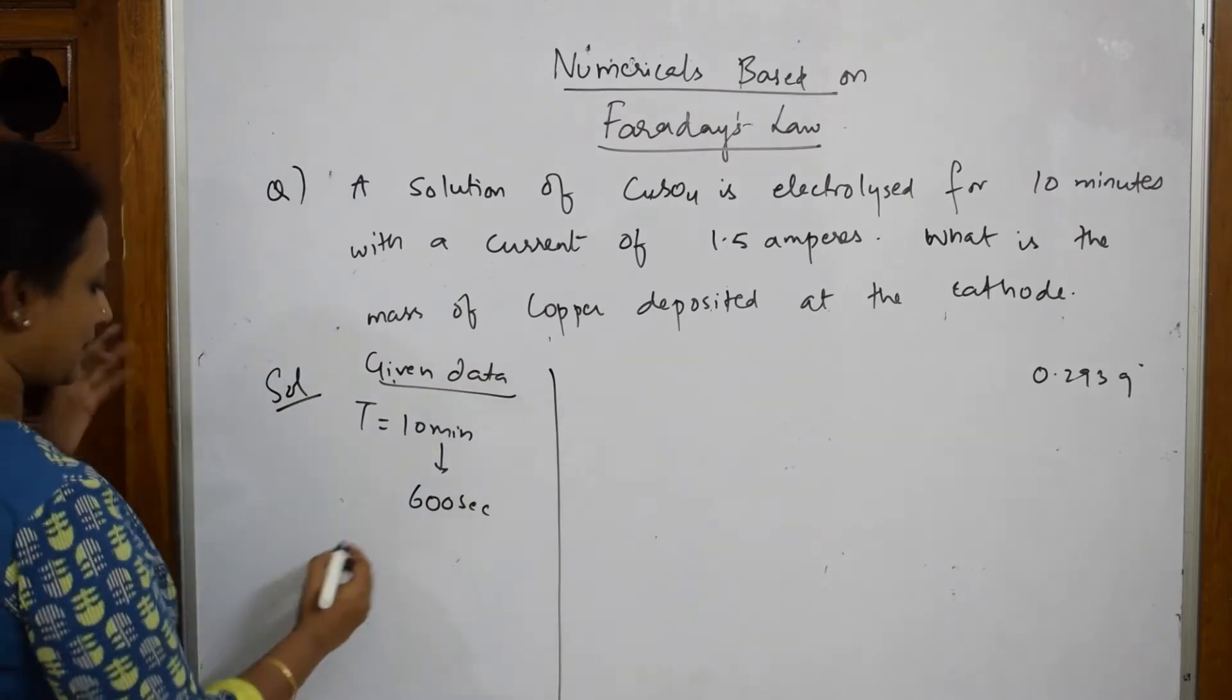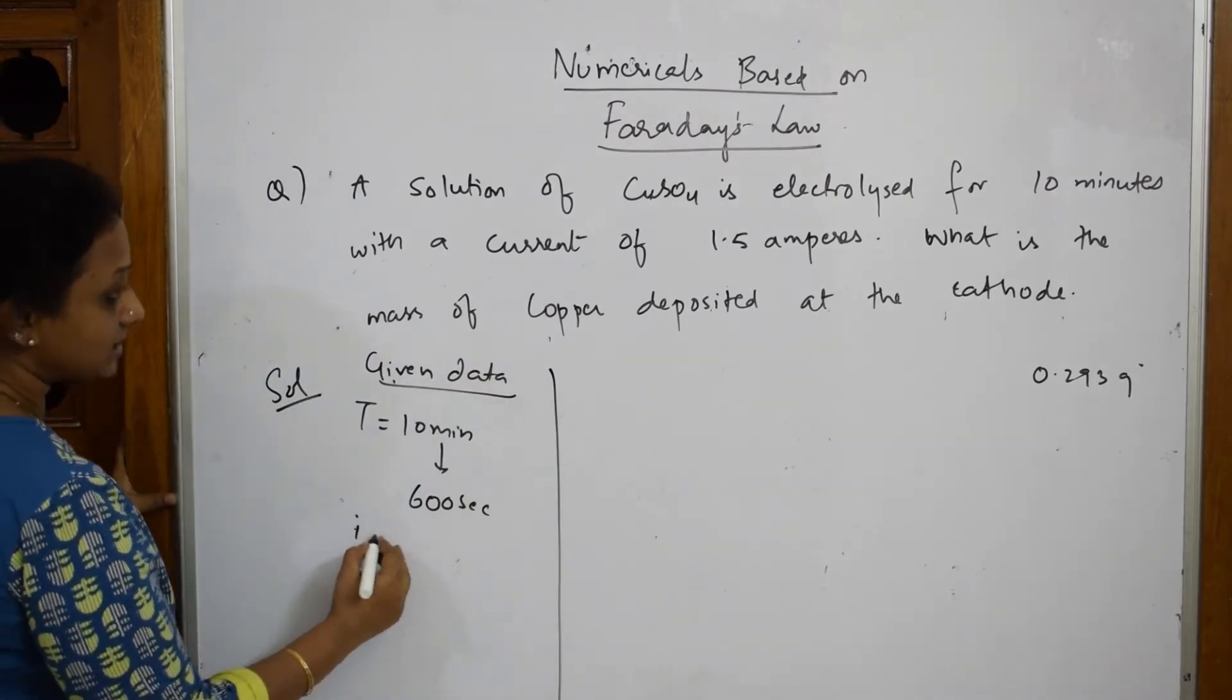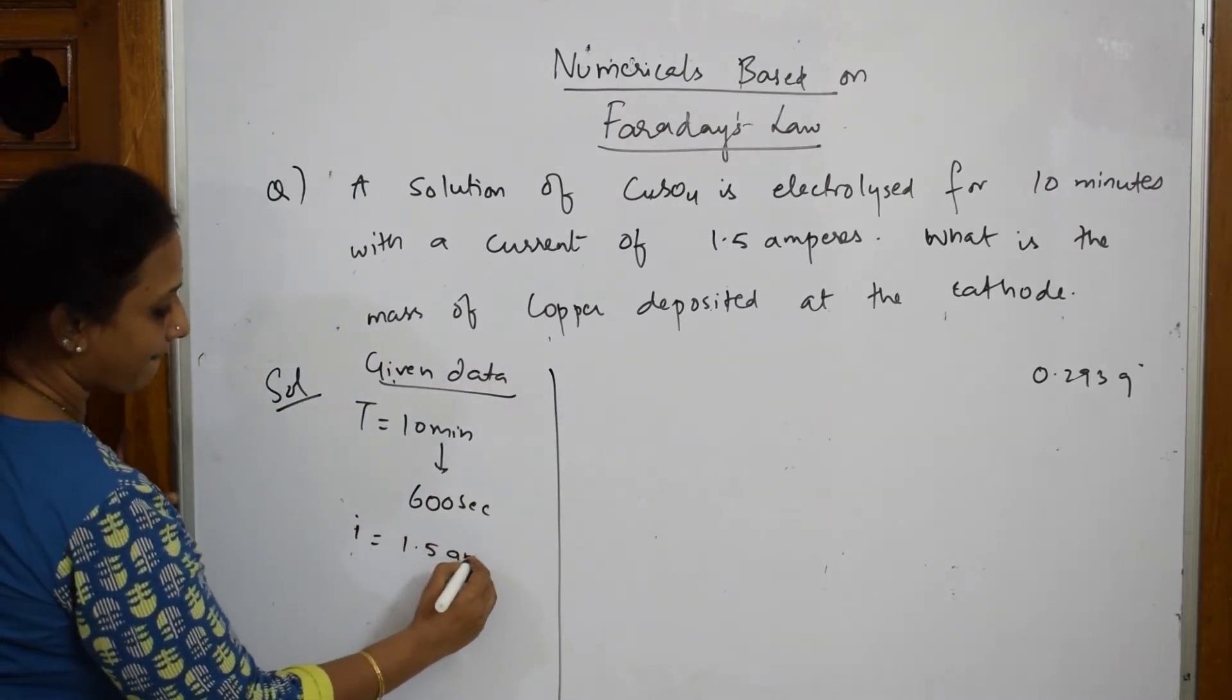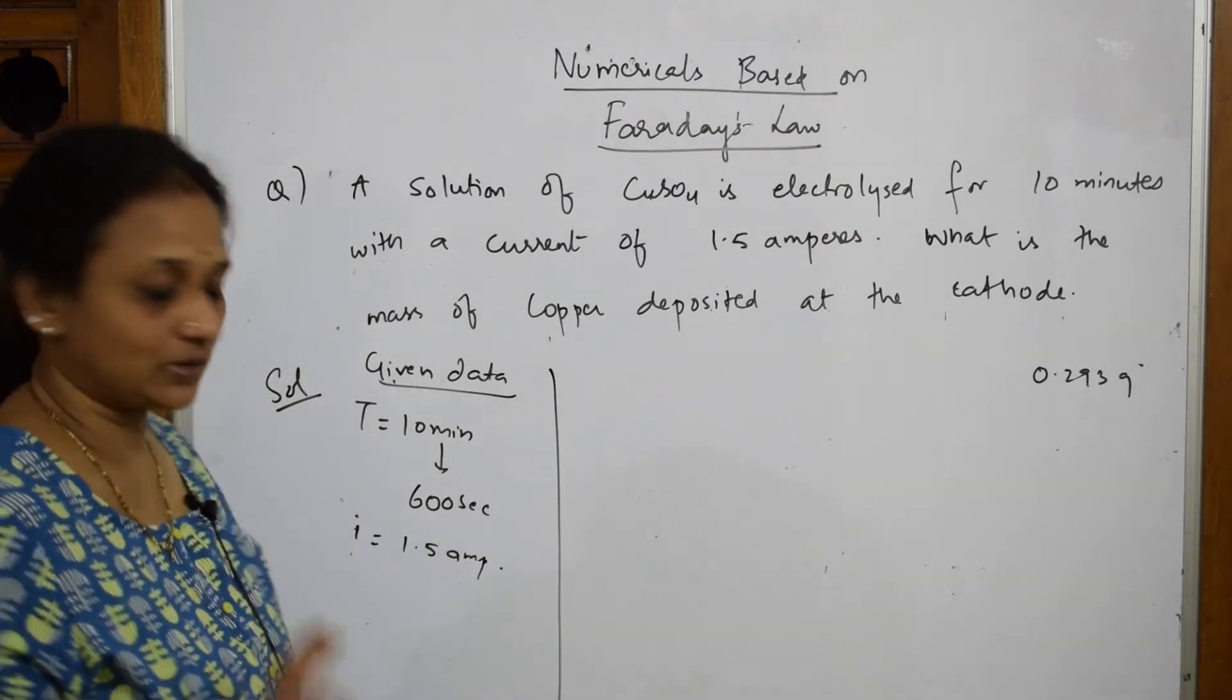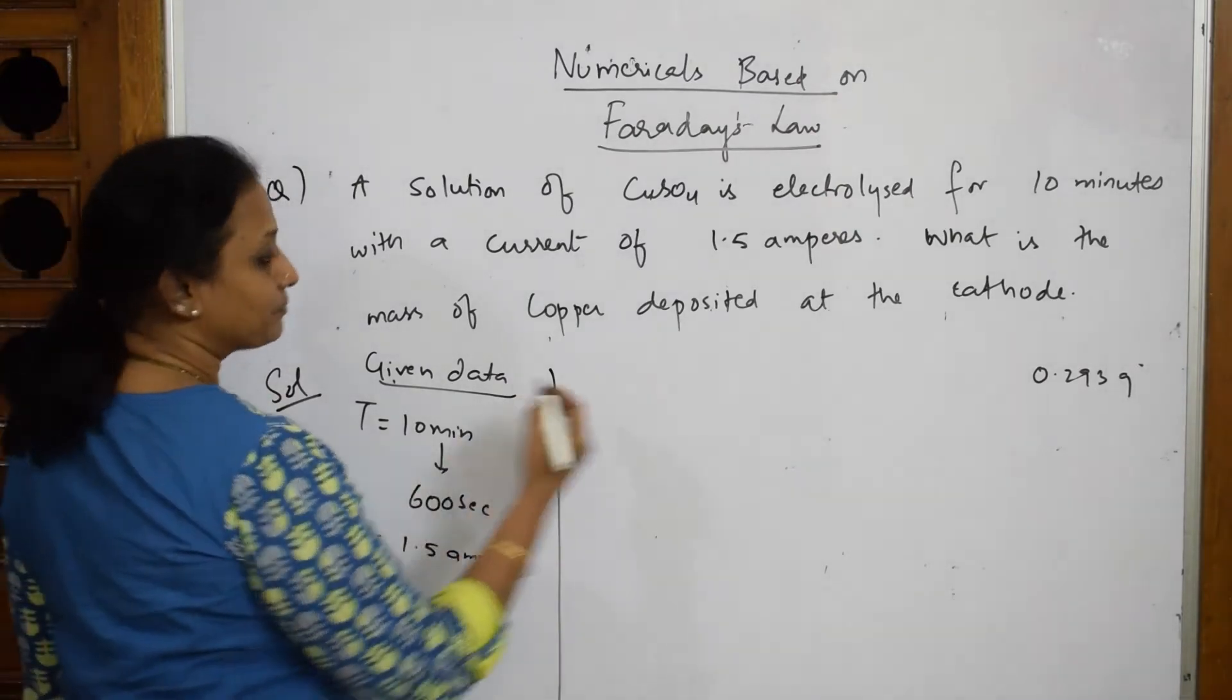Now, with the current of 1.5 amperes, your I is given to me, that is 1.5 amperes. What is a mass of copper deposited in cathode? Let us write one formula directly.